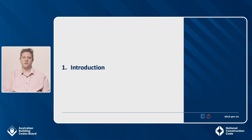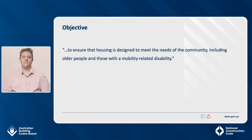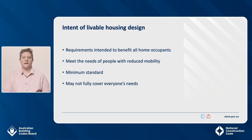Let's get started with our presentation. The objective of the liveable housing design requirements is to ensure that housing is designed to meet the needs of the community, including older people and those with mobility-related disability. The intent of liveable housing design is to set out requirements that benefit all home occupants, including meeting the needs of people with reduced mobility. The requirements are a minimum standard and may not fully cover everyone's needs. There may be times where further design changes or home modifications are necessary to suit a person's specific needs or preferences.